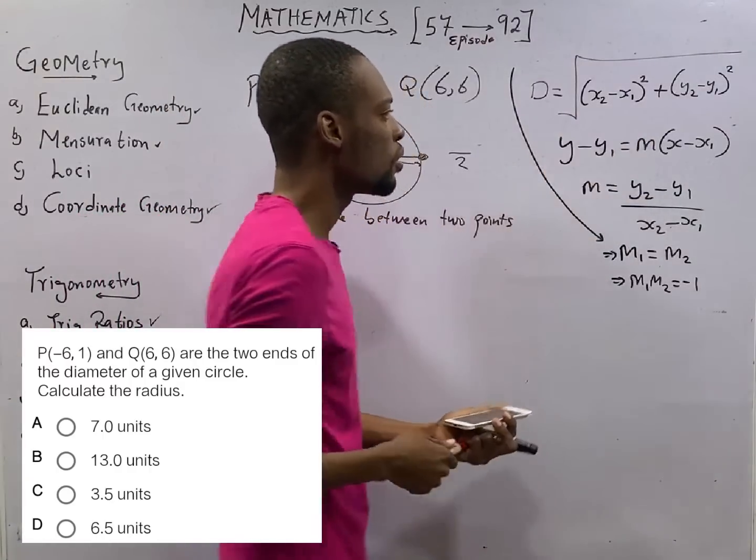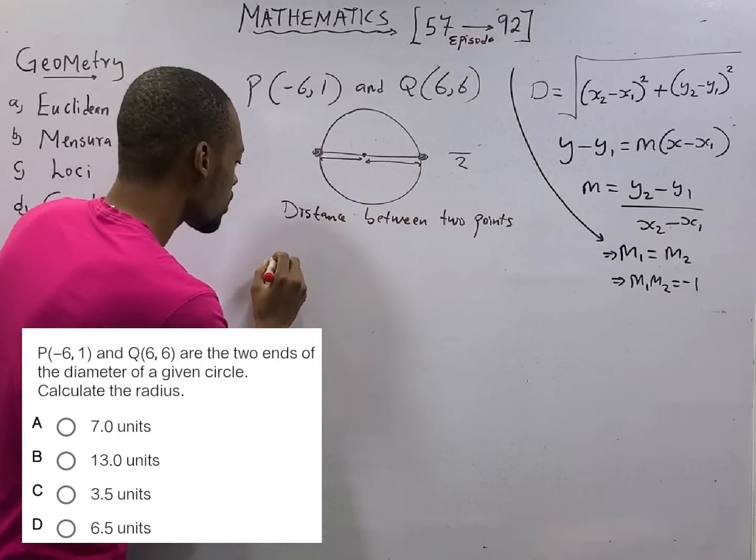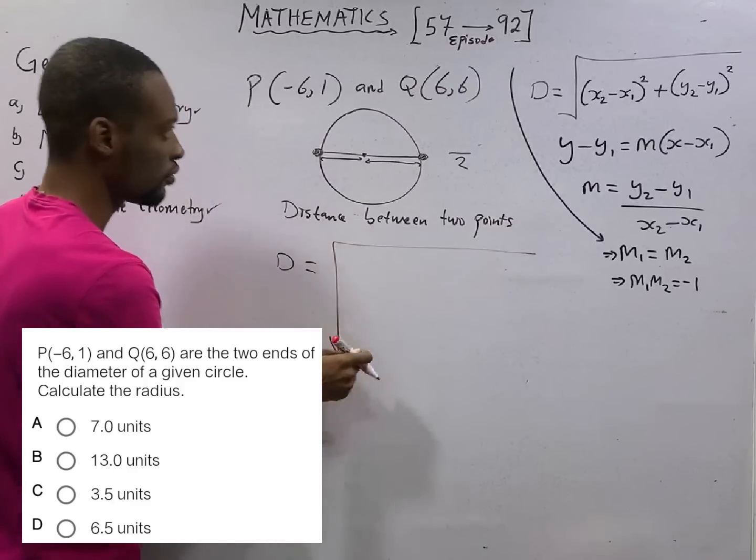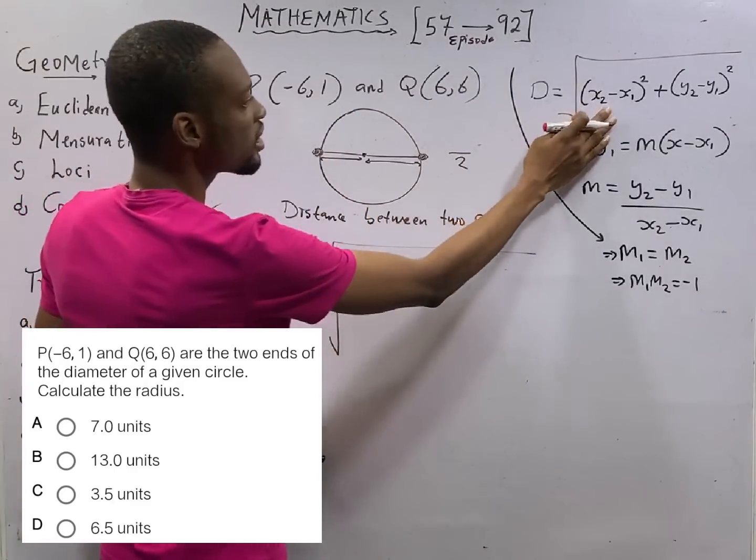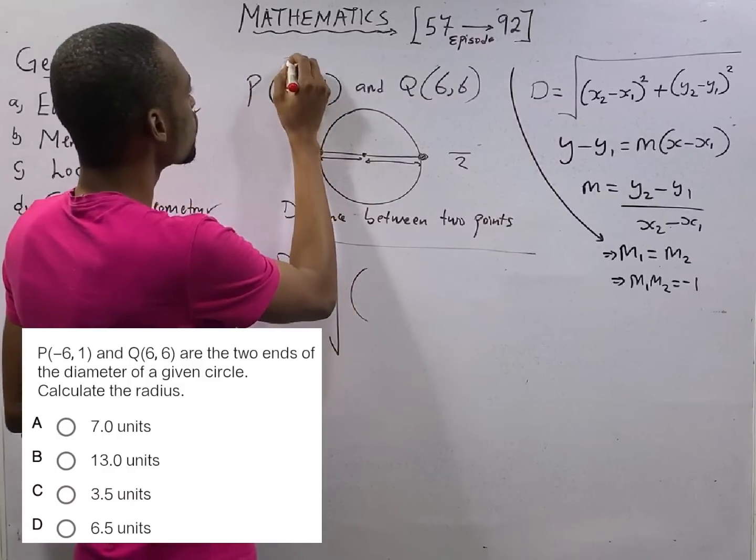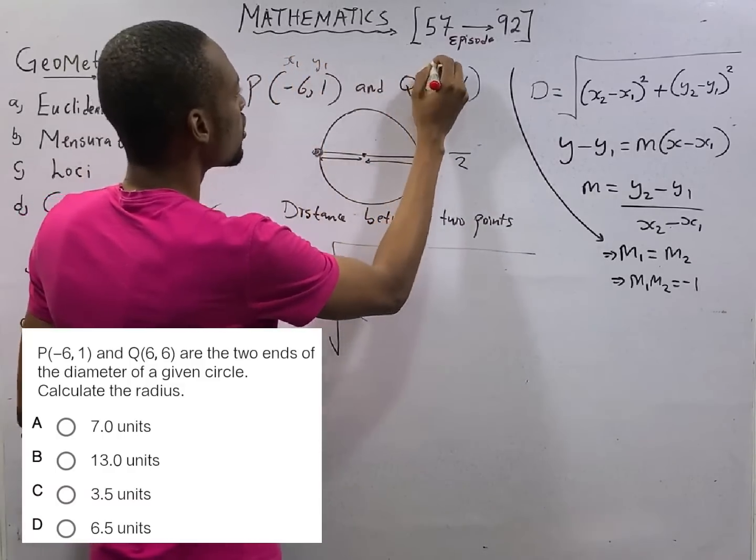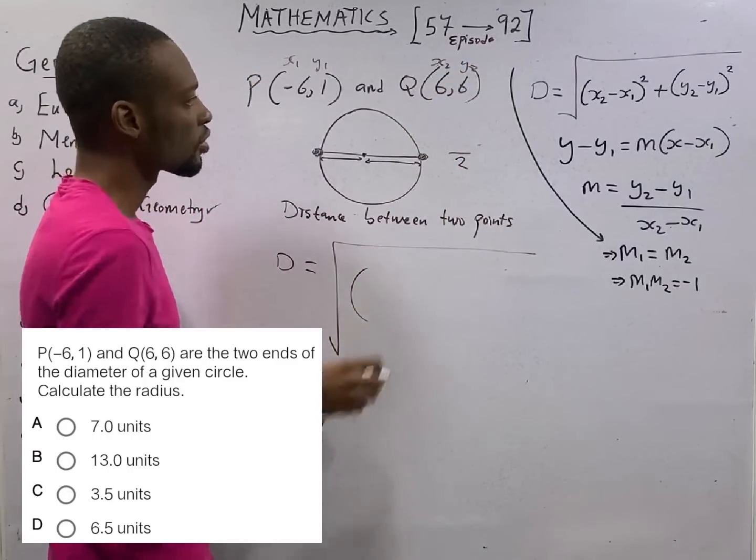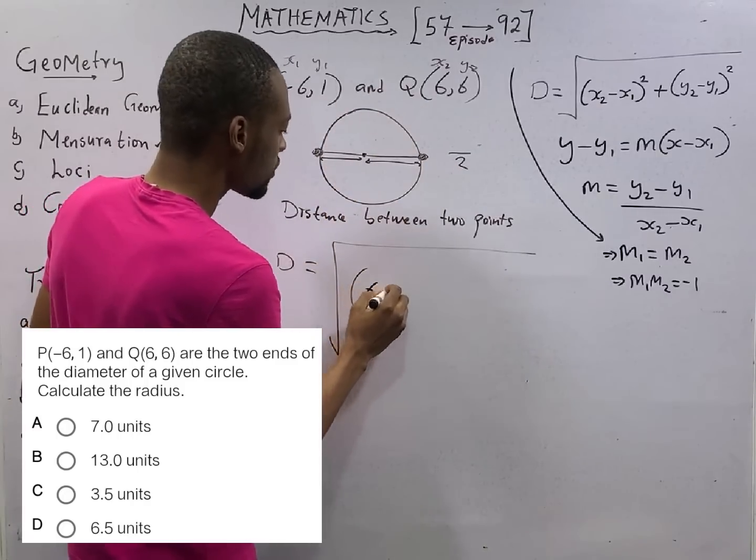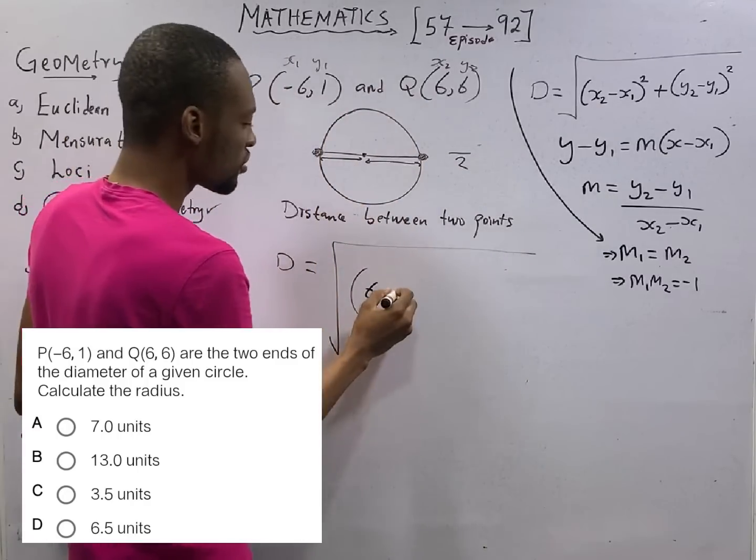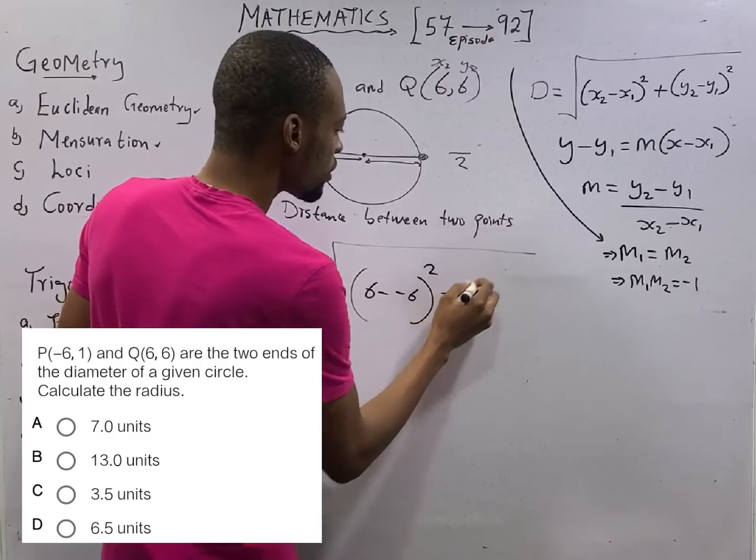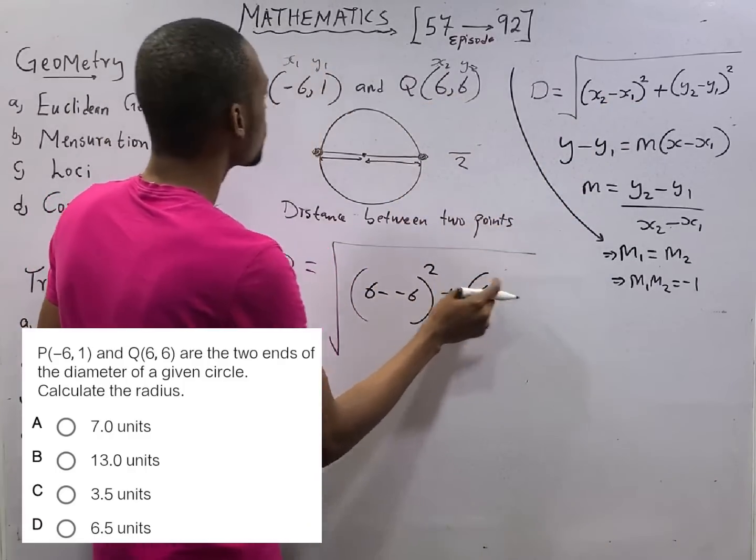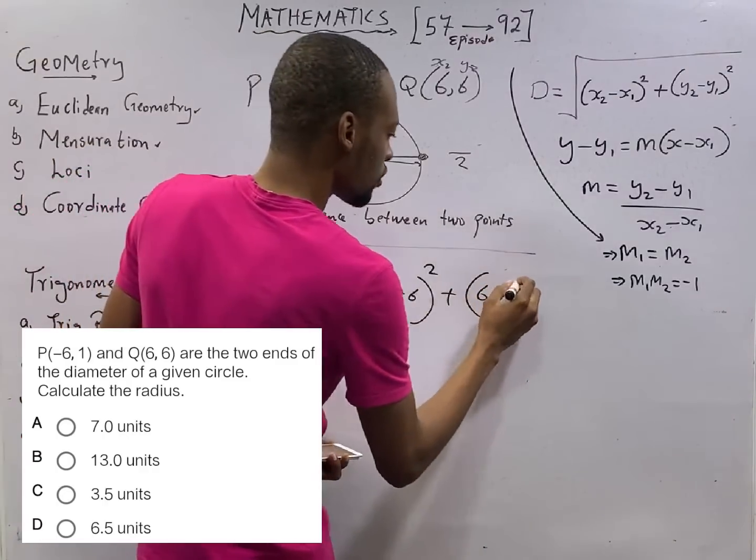So how do we find distance between these points? When we are given coordinates or coordinate geometry, distance between two points is this formula. You can see here. So the distance from here to here is D equals: x₁, y₁, x₂, y₂. Let's go with that. x₂ is 6 minus x₁ is -6, squared, plus y₂ is 6 minus y₁ is 1, squared.